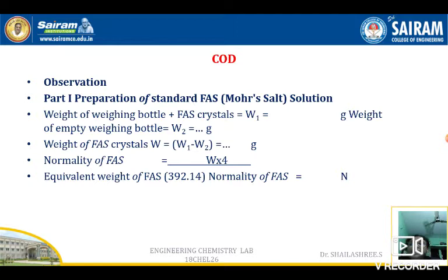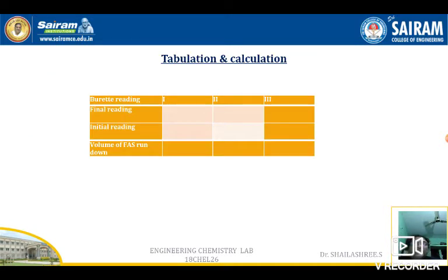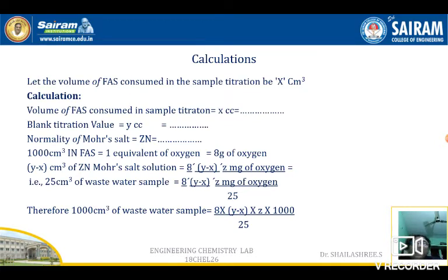Coming to the calculation part: you weigh the salt. Bottle plus salt weight is W1; empty weight of the bottle is W2. W1 minus W2 gives the weight of salt taken. Calculate the normality of FAS: that is W × 4 / 392.14, giving you the normality of FAS (Z). Draw a table with final reading, initial reading, and volume of FAS run down. Whatever the amount of FAS used, take it as X. Let the volume of FAS consumed be X. Y is the blank titration value that will be given to you by the examiner; X is one of your three trial readings.